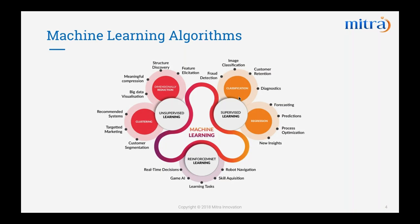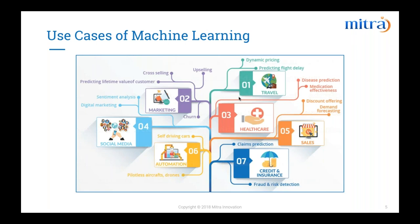Now that we've seen the machine learning algorithm categories, let's look at use cases and business problems. When creating a machine learning model in an enterprise, first we need to think of a business problem. For example, in the sales domain, if we can predict demand or predict sales for the next quarter, that would be a huge advantage — we can prepare for the unexpected. In marketing, we can predict customer churn or upsell products based on customer profiles. When implementing a machine learning model in production, we first need to think of a valid business problem where a machine learning algorithm may add value.